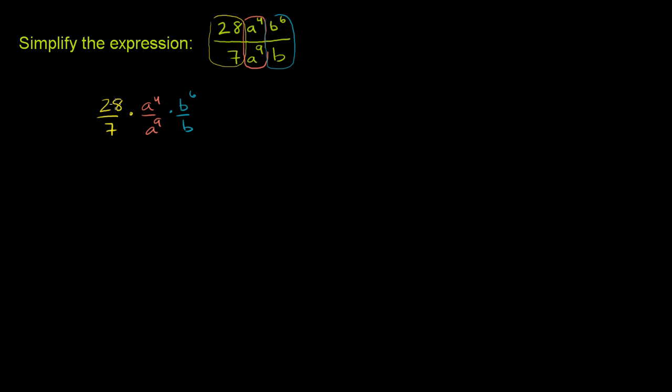And if you multiplied all this out, you'd take the product of the numerators, you'd get that up there, you'd get the product of the denominators, you'd get this right there. The whole reason I did that is because each of these terms can be simplified pretty easily.